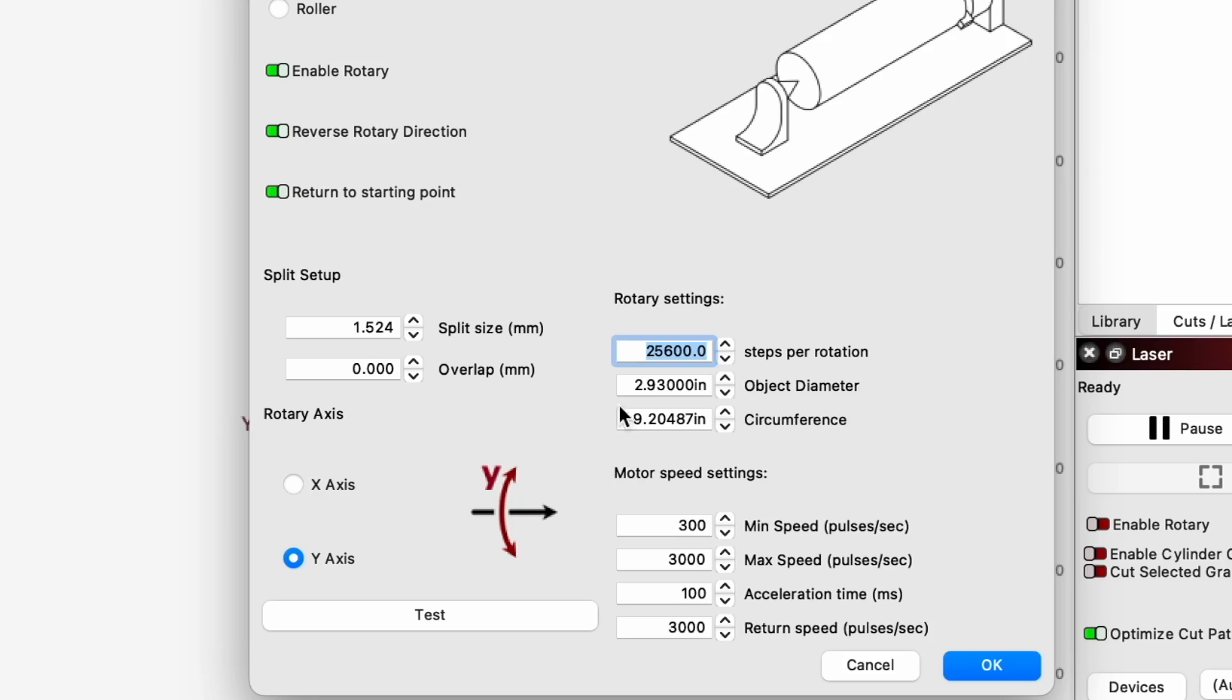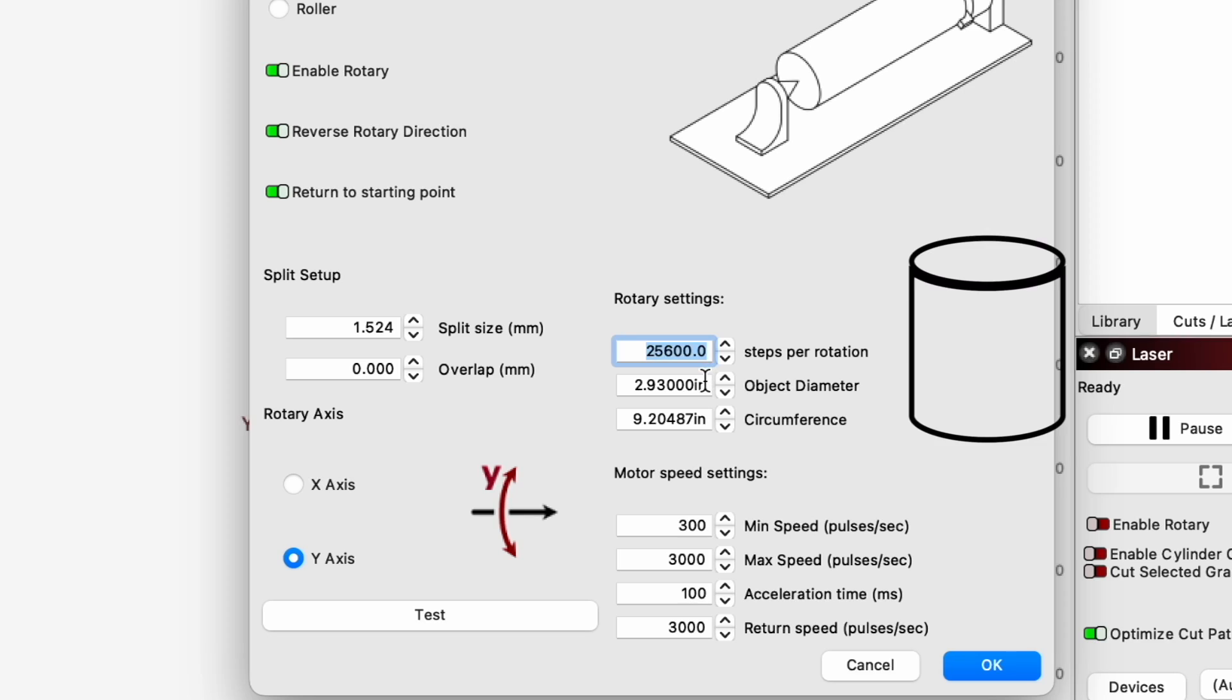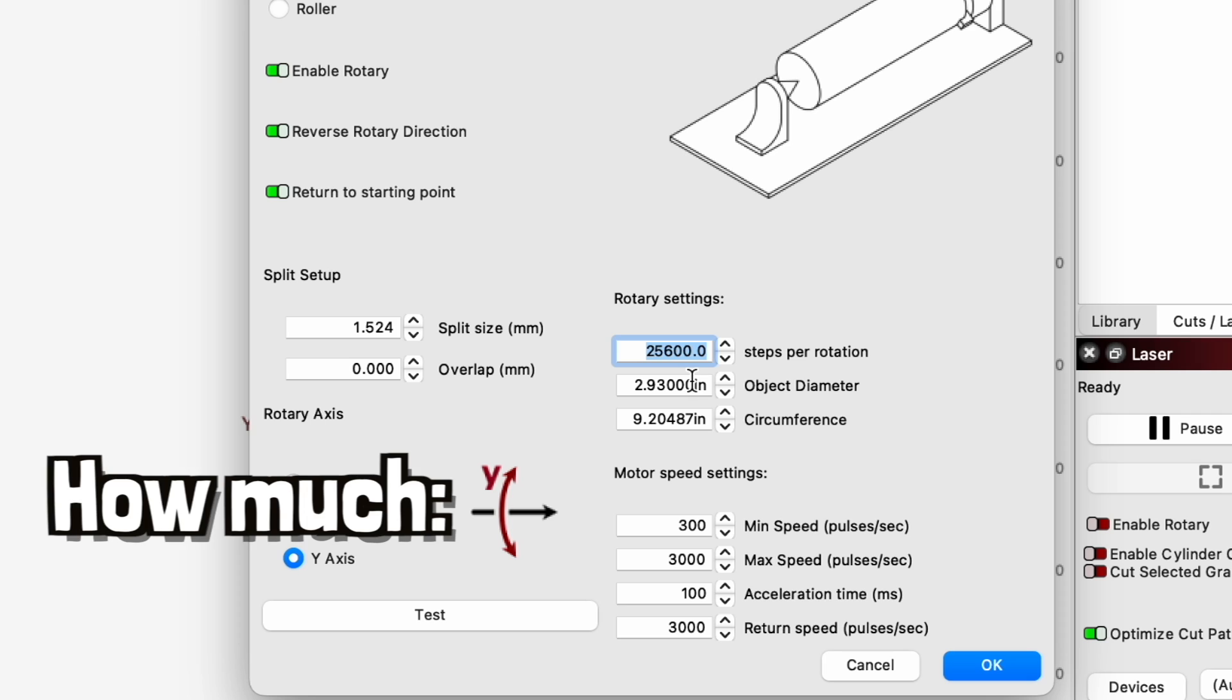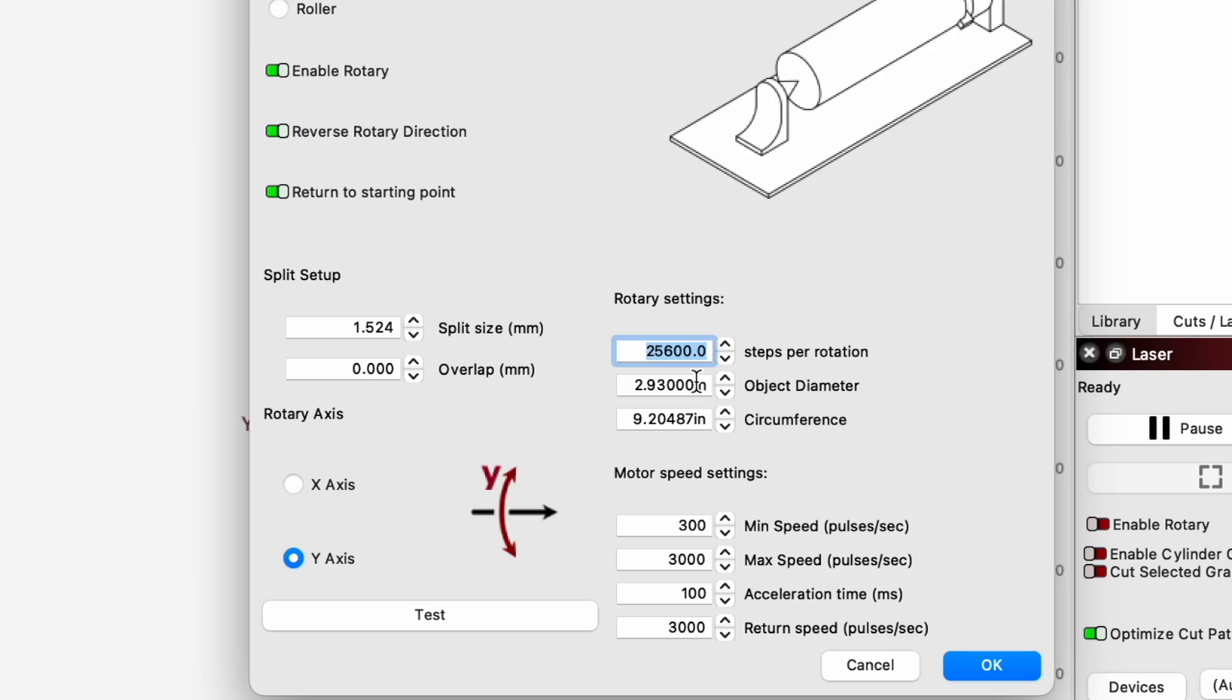So the next important thing is obviously the object that you're going to engrave. You need to get an accurate diameter or circumference of whatever cylinder you're engraving because that will basically dictate how much the rotary will turn for a particular design. So we're going to go ahead and get the calipers out and measure this out.